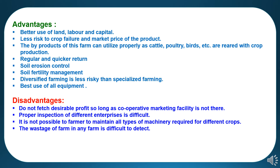Less risk to crop failure and market prices is common in diversified farming, providing risk mitigation in any adverse conditions. The by-products of diversified farming on the farm can be utilized properly as cattle, poultry and birds are reared alongside crop production. Regular and quicker returns are obtained from various enterprises. Soil erosion can be checked as land is kept under cultivation throughout the year, and soil fertility is maintained as well.